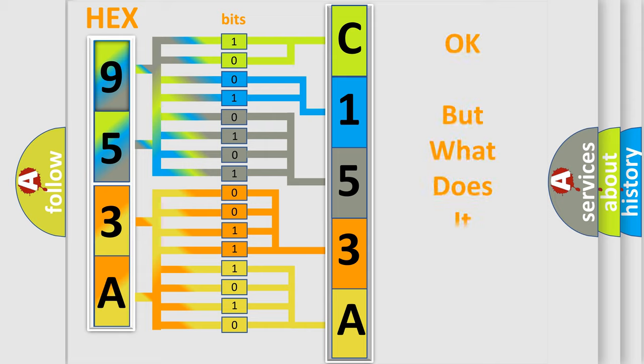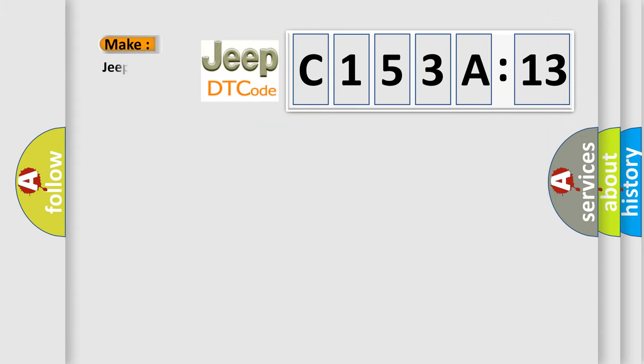The number itself does not make sense to us if we cannot assign information about what it actually expresses. So, what does the Diagnostic Trouble Code C153A13 interpret specifically for Jeep car manufacturers?